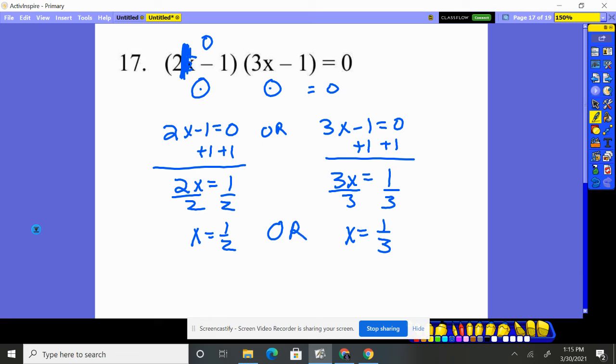So your two possibilities are either x is 1 half or x is 1 third, because if you plug 1 third in right here, 3 times a third is 1, 1 minus 1 is 0. So yeah, those are the two possibilities.